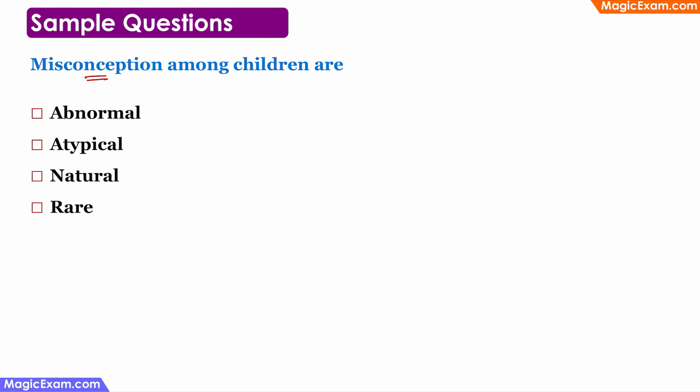Third question: 'Misconceptions among children are ___.' Are they abnormal? No, they are not abnormal — they are completely normal. Atypical? No, they are typical because every child will have some misconceptions at some point. Natural? Yes — misconceptions and alternative conceptions are completely natural. Are they rare? No, they are not rare — everyone will have some misconception, preconception, or alternative conception in their mind. So option three — 'natural' — is the correct answer.